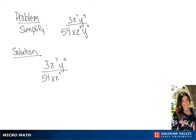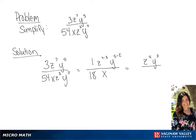We can simplify the 3 over 54, and that will be 1 over 18. Since we have a common base of z, we can subtract those exponents. For y, we can subtract those exponents, and then in our denominator we will have x. So if we simplify this fraction, we end up with z to the 4th power, y to the 3rd, all over 18x.